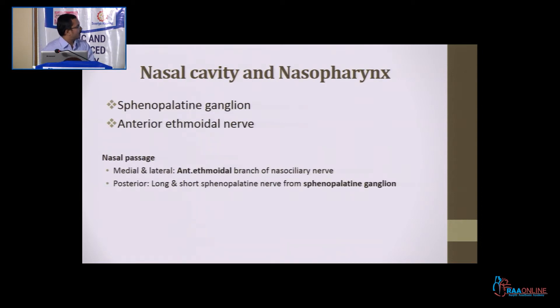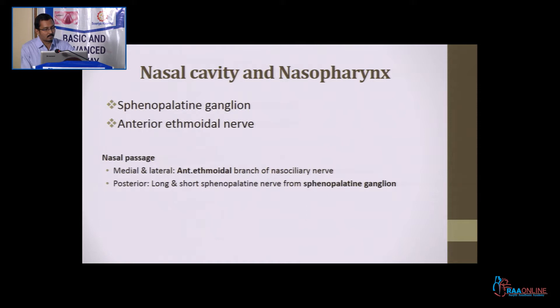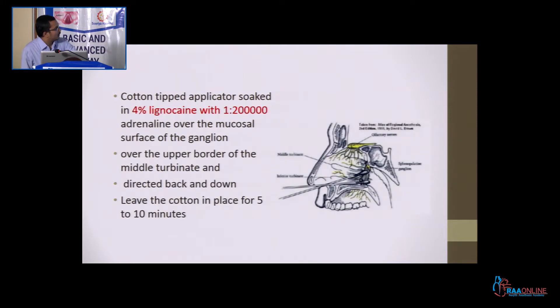The nasal cavity has two nerve supplies: the splenopalatine ganglion and the anterior ethmoidal nerve. The medial and lateral parts of the nasal cavity are supplied by the anterior ethmoidal branch of the nasal nerve, and the posterior part is supplied by the splenopalatine ganglion.